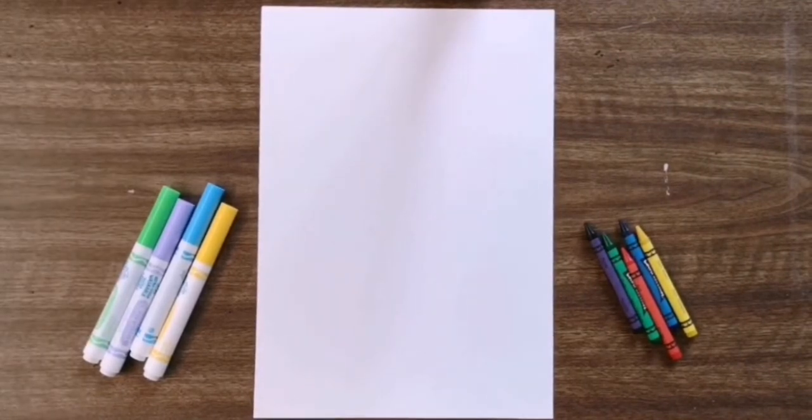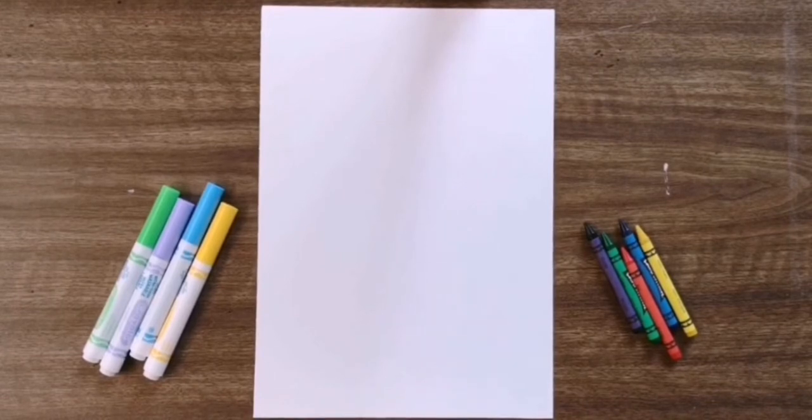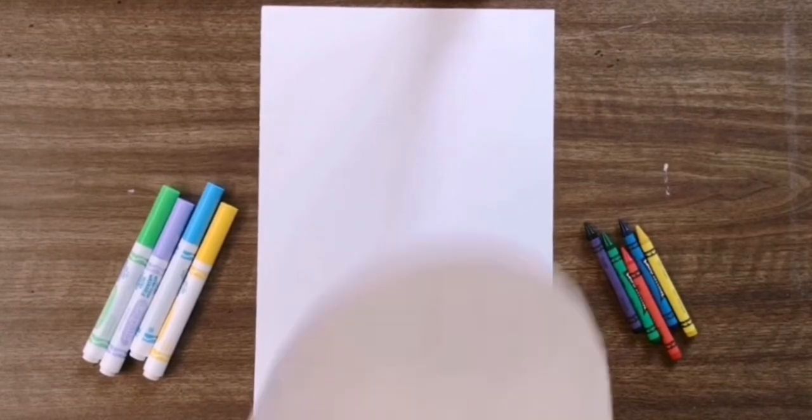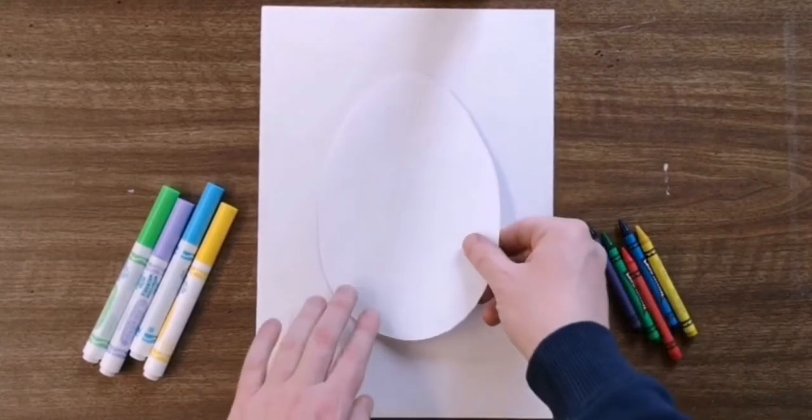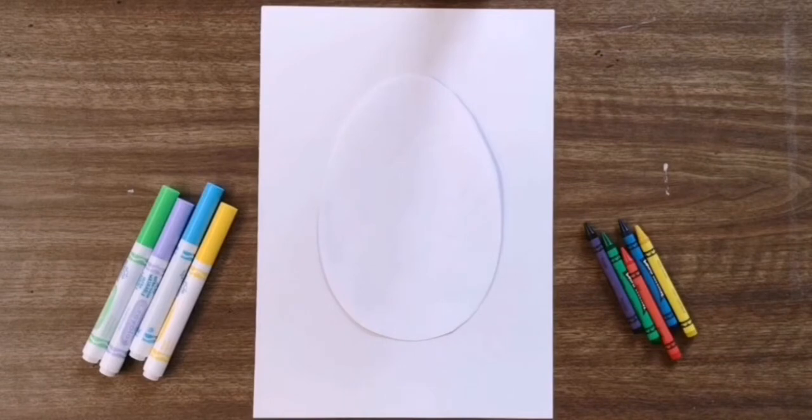So we want to draw our egg in the center of the page. Now if you want you can go on the internet and find a template of an egg, print it off, cut it out, and then trace it. That's what I did. So I'm gonna put my template right here. It's a lot easier, but if you want to draw it freehand, go ahead.